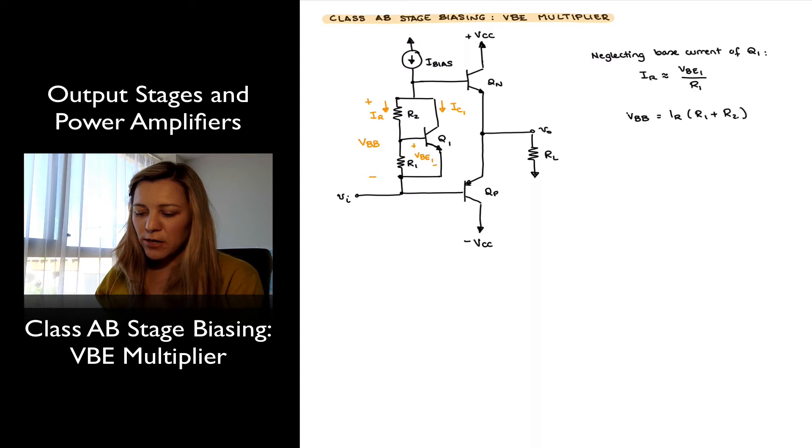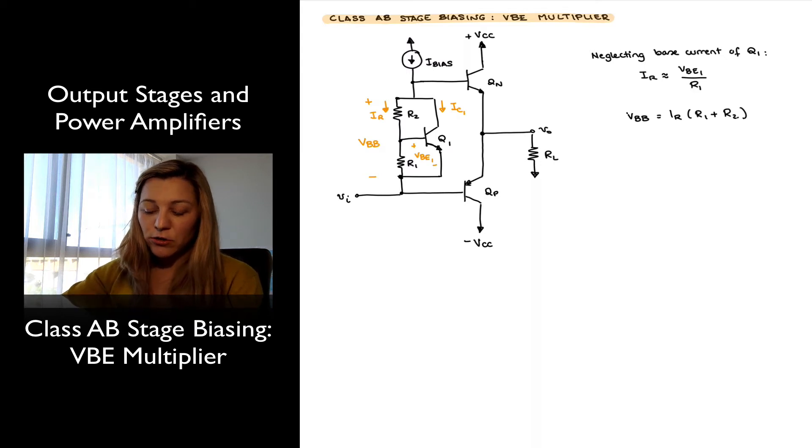I've written there that if I neglect any base current going into my transistor Q1, I can assume that R1 and R2 form a voltage divider where all the current IR that is flowing through R2 is also flowing through R1, with no current going into the base of Q1. Therefore, I can express that current IR as being approximately equal to the base-emitter voltage across transistor Q1 divided by R1—that's just by Ohm's law.